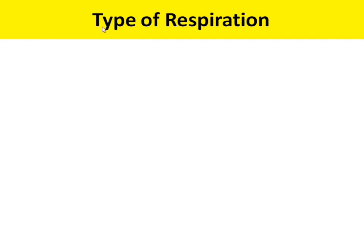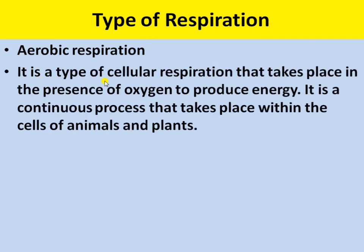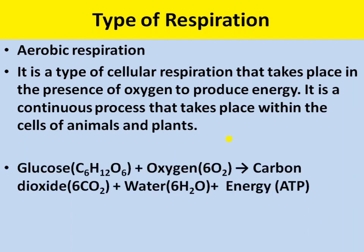There are two types of respiration: aerobic respiration and anaerobic respiration. Aerobic respiration is the type of cellular respiration that takes place in the presence of oxygen to produce energy. It is a continuous process that takes place within the cells of animals and plants. When breakdown of food occurs with the use of oxygen, it is called aerobic respiration. Organisms that undergo aerobic respiration are called aerobes.